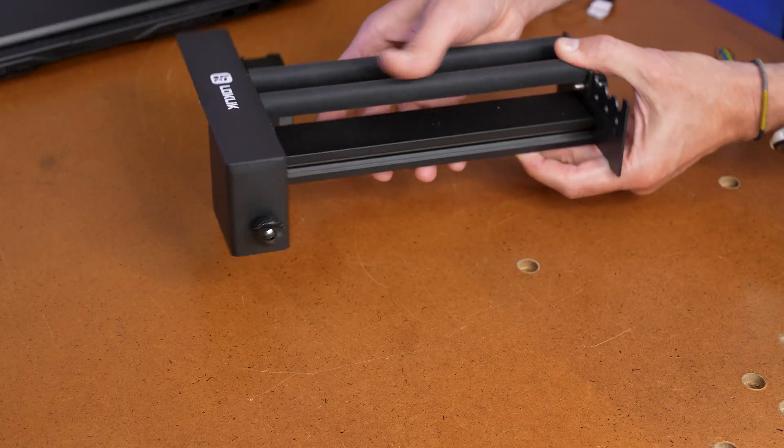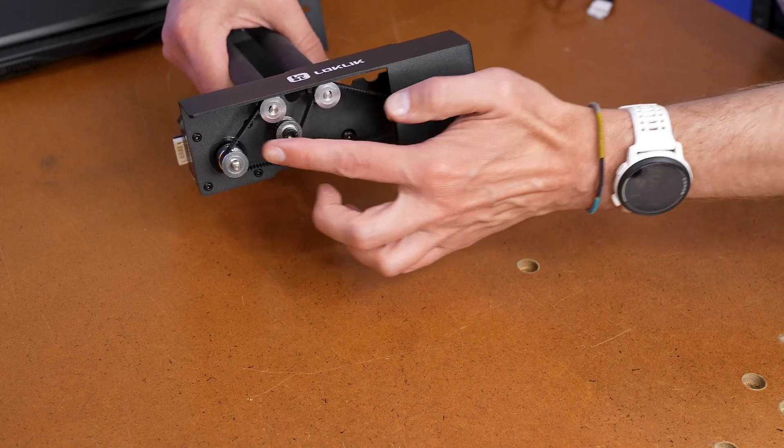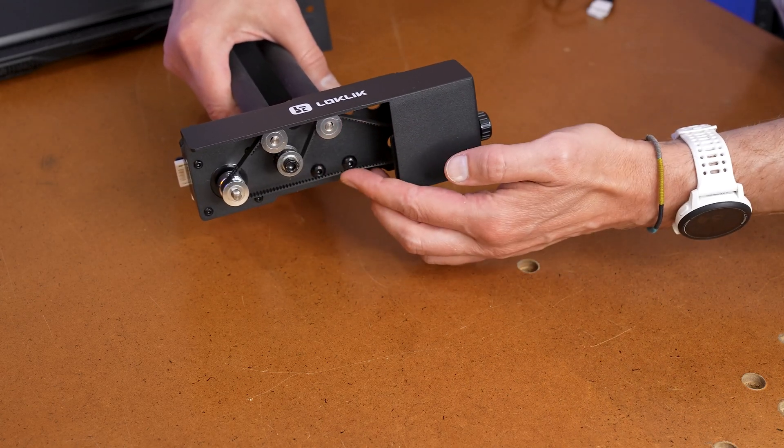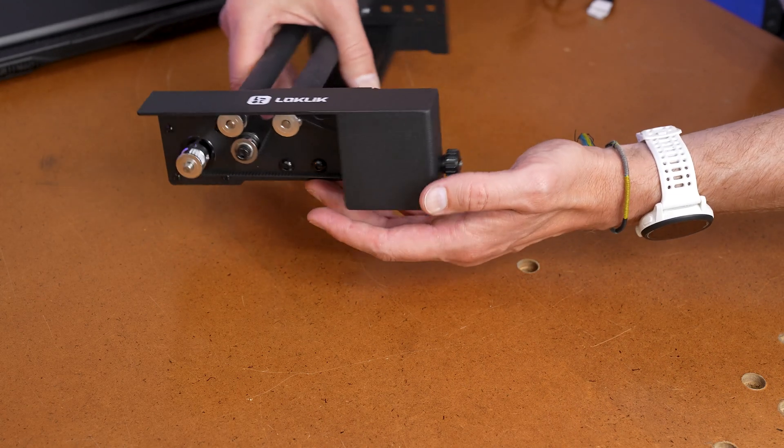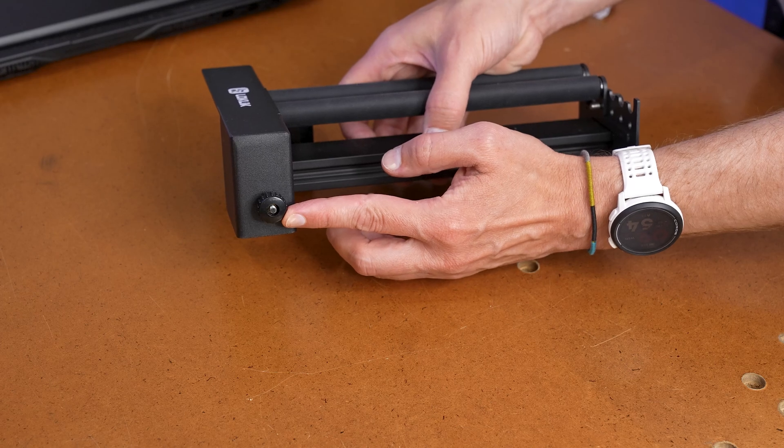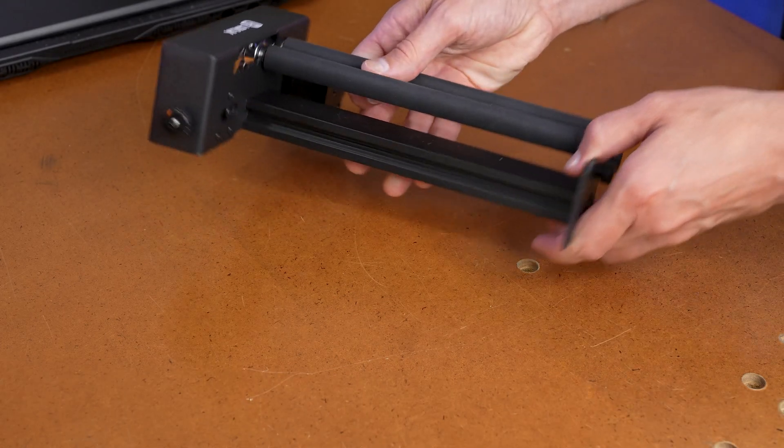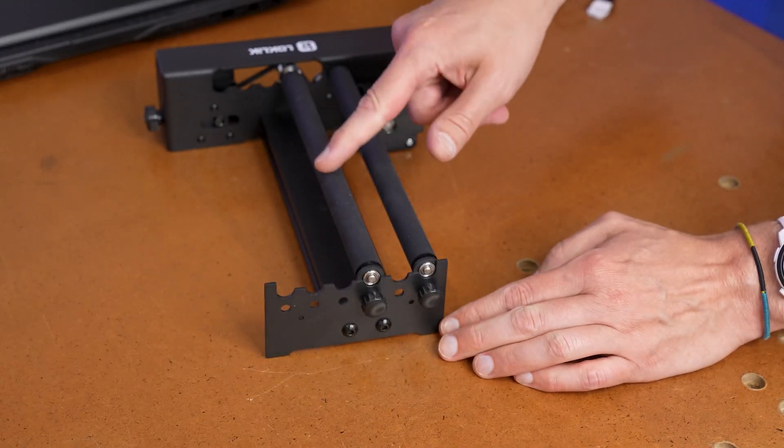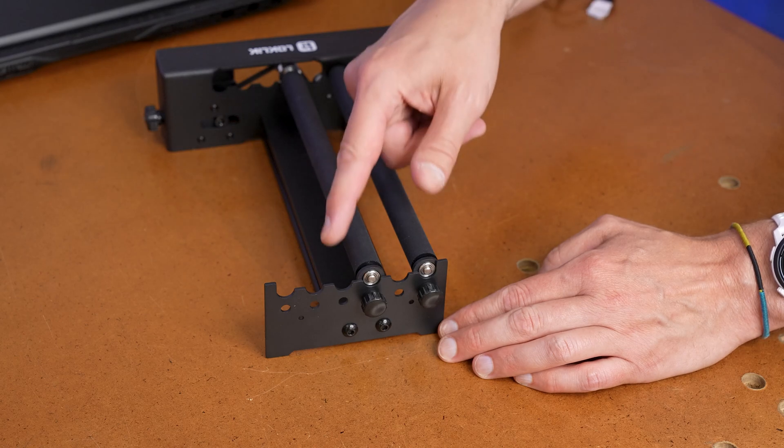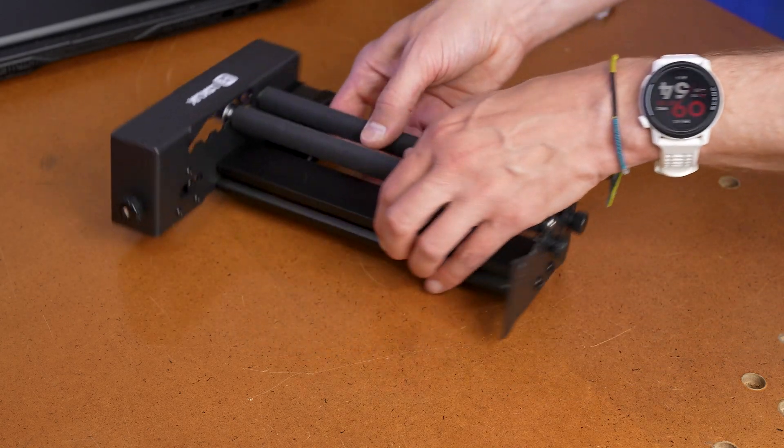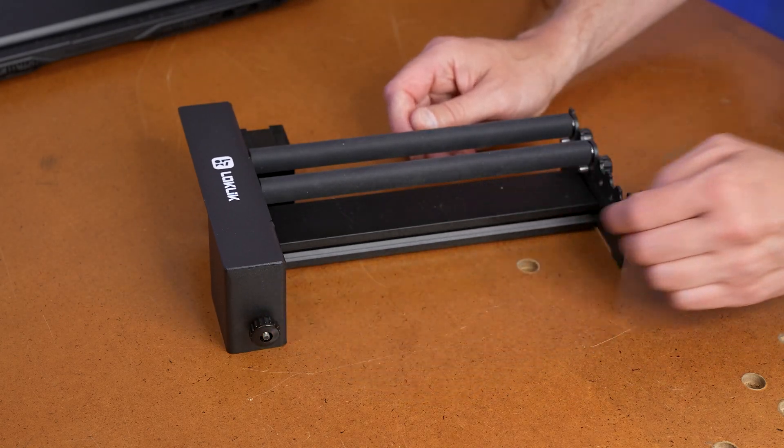When I flip this around, we're going to see that there's a number of pulleys in here along with a belt. This belt does get retention with this convenient thumbscrew right here, and that's because as I adjust this movable roller to different positions, I will need to reset the tension of the belt.